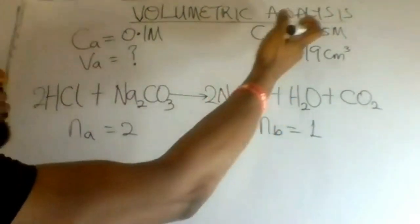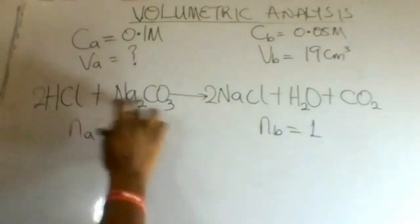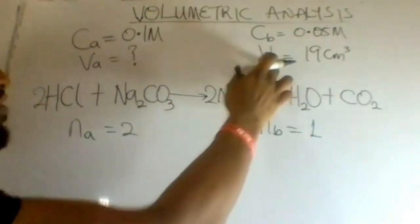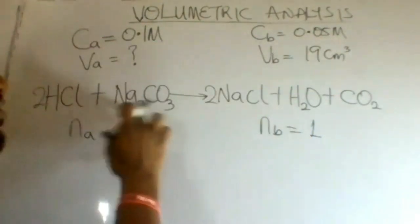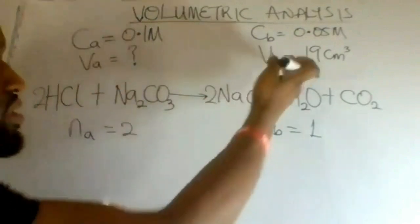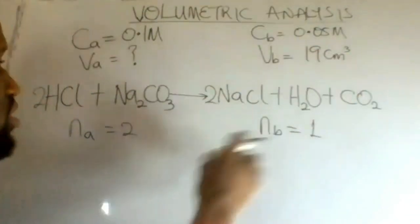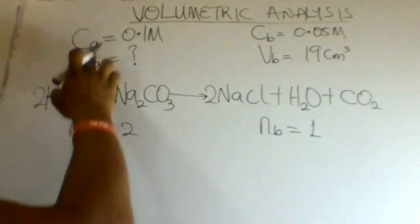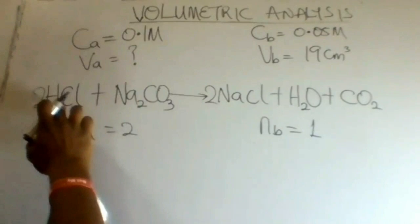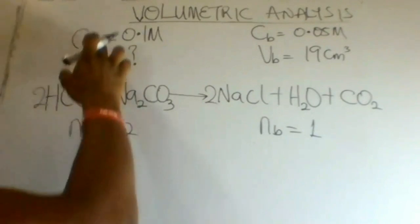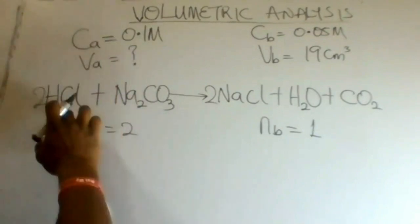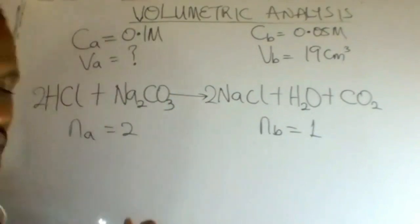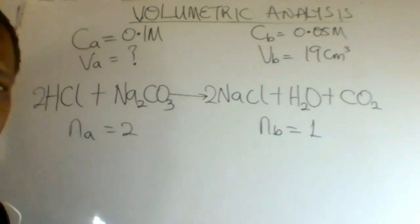The concentration of the base — sodium carbonate — is 0.05. The volume of the base — sodium carbonate — is 19 cm³. The acid is HCl. The concentration of HCl is 0.1, and we are looking for the volume of the HCl used.